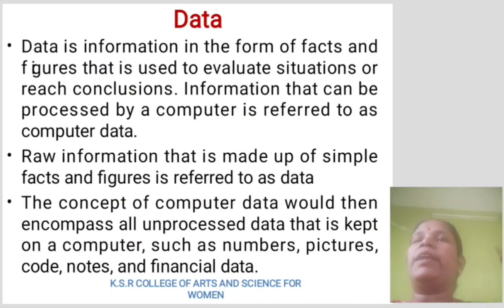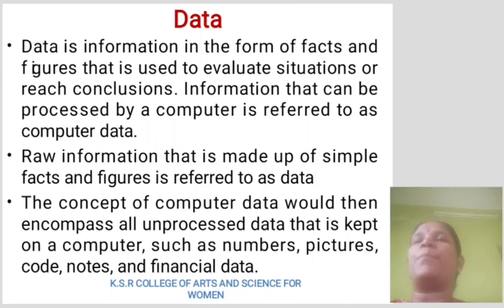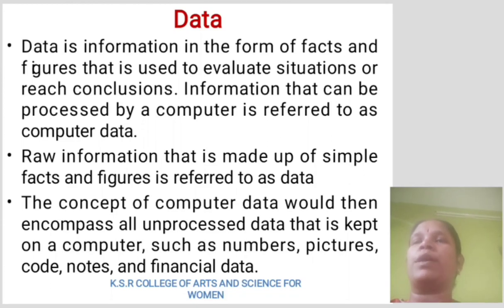Data. Data is information in the form of facts and figures that is used to evaluate situations or research conclusions. Information that can be processed by a computer is referred to as computer data. Raw information made up of simple facts and figures is referred to as data. The concept of computer data encompasses all unprocessed data kept on a computer, such as numbers, pictures, code, notes, and financial data.